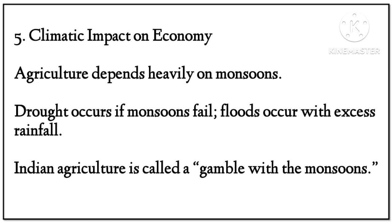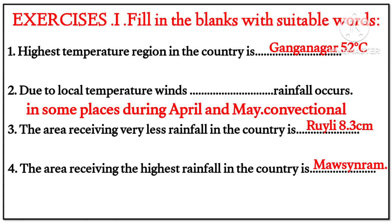Climatic impact on economy: agriculture depends heavily on monsoons. Drought occurs if the monsoon fails; floods occur with excessive rainfall. Indian agriculture is therefore called 'gambling with the monsoon.'